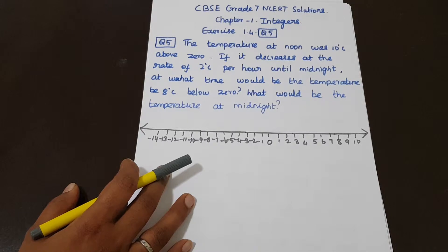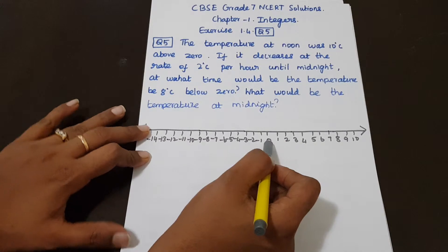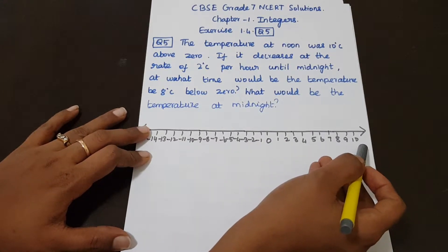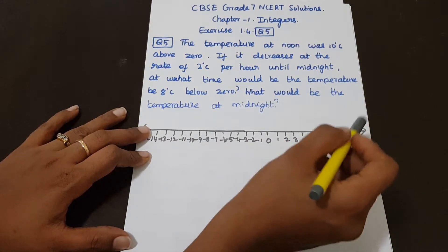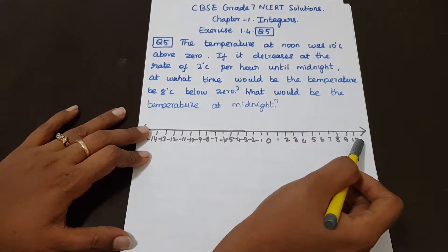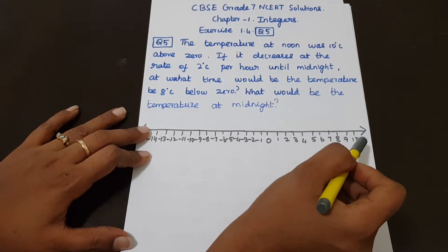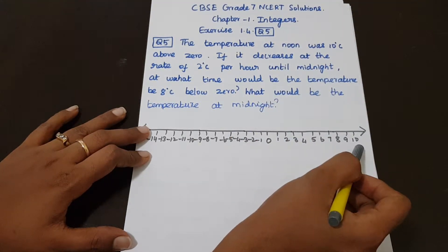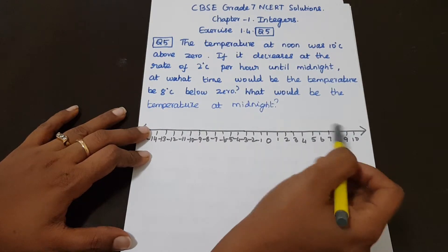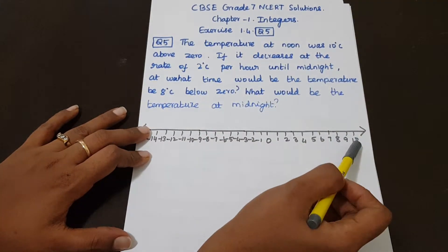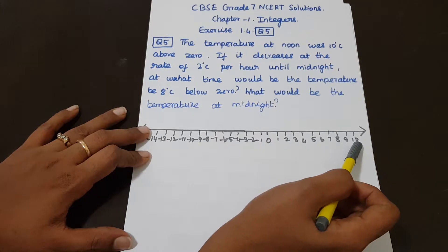If temperature is 10 degree Celsius above 0, that is positive — at 12 noon, 12 o'clock, the temperature is 10 degree Celsius, which is above 0, so that is positive.